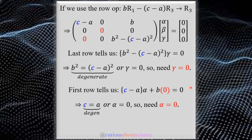With γ = 0, the first row gives (c-a)·α + b·γ = 0, but since γ = 0 we get (c-a)·α = 0. Either c = a — another degenerate solution — or α = 0. Clearly we want α = 0. Because the whole middle row was zeros we could not eliminate β, so β is a free variable.